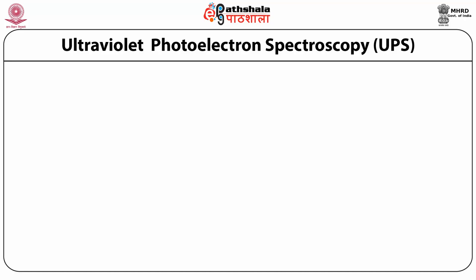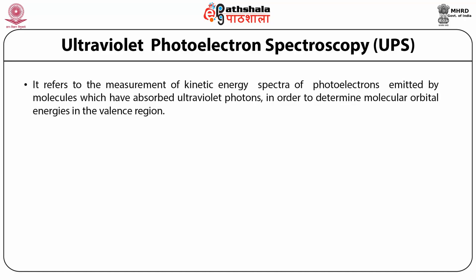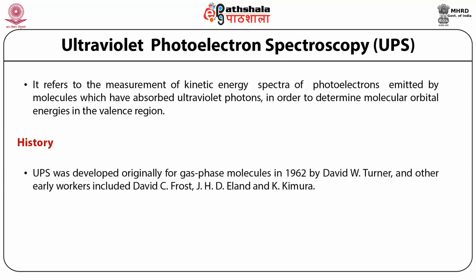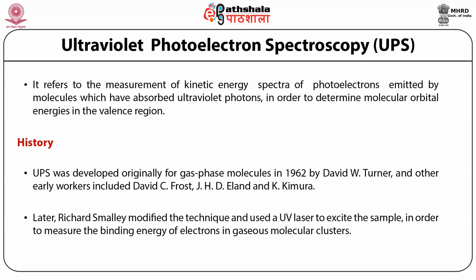Ultraviolet photoelectron spectroscopy refers to the measurement of kinetic energy spectra of photoelectrons emitted by molecules which have absorbed ultraviolet photons, in order to determine molecular orbital energies in the valence region. UPS was originally developed for gas phase molecules in 1962 by David W. Turner; other early workers included David C. Frost, J.H.D. Allen, and K. Kimura. Later, Richard Smalley modified the technique using a UV laser to excite the sample in order to measure the binding energy of electrons in gaseous molecular clusters.